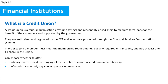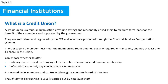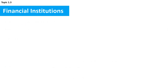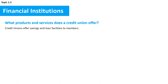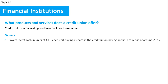In either case, all members are equal regardless of the size of their shareholding. Credit unions are owned by their members and controlled through a voluntary board of directors elected from current members at the annual general meeting (AGM), though day-to-day running is usually carried out by employed staff. Savers invest cash in units of £1, with each unit buying a share in the credit union and each share paying annual dividends of around 2–3%, with no maximum — a cap that was removed in 2012 with changes to the Credit Union Act.